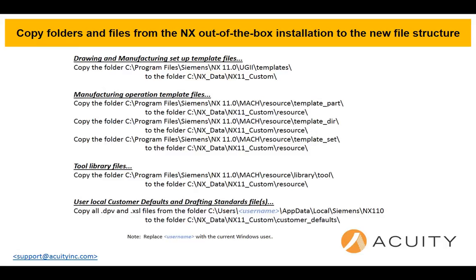So what folders and files do we need to copy and paste into our new folder structure? Basically, this listing shows all of the folders and files that need to be copied and pasted. There are really only four copies and four pastes here, because all three of the manufacturing operation template files are in one folder and go into one folder. The tool library files and the drawing/manufacturing setup templates are one copy and one paste each. I'm going to show you basically how to do this quickly in a demonstration.